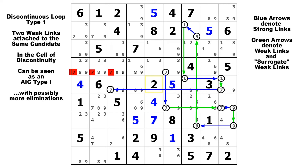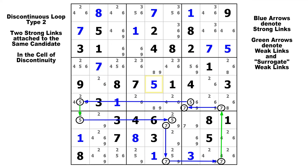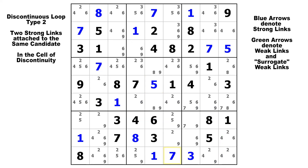Let's move to the DL type 2. Starting on this 7 here in row 9, column 6, we have strong, weak, strong, weak, strong, weak, strong, weak, strong. We have two strong links connected to the same candidate in the cell of discontinuity, so we know that candidate must be true and we can solve that cell for that candidate. So 7 is going to be the solution to that cell. Notice that this chain was made of only 5s and 7s — so there's a lot you can do with two or three candidates. That's a DL type 2.